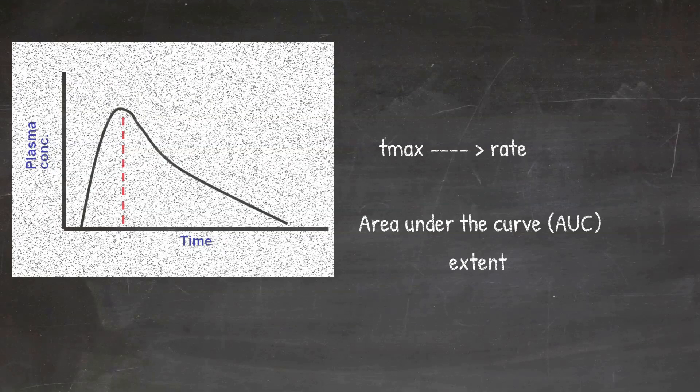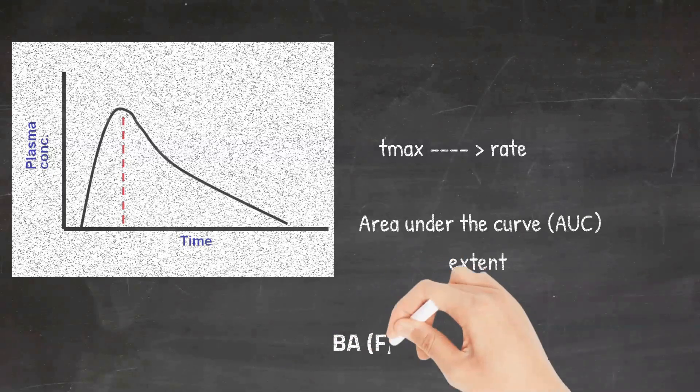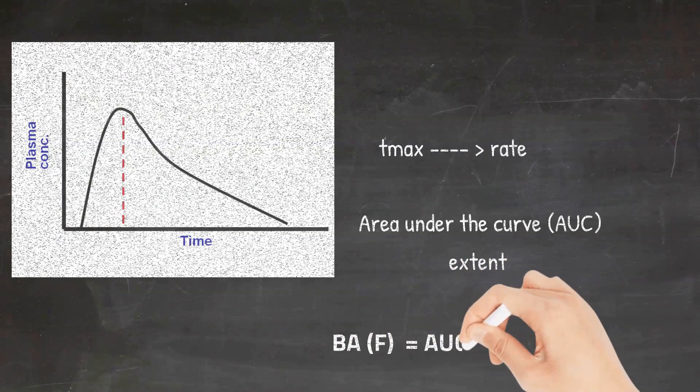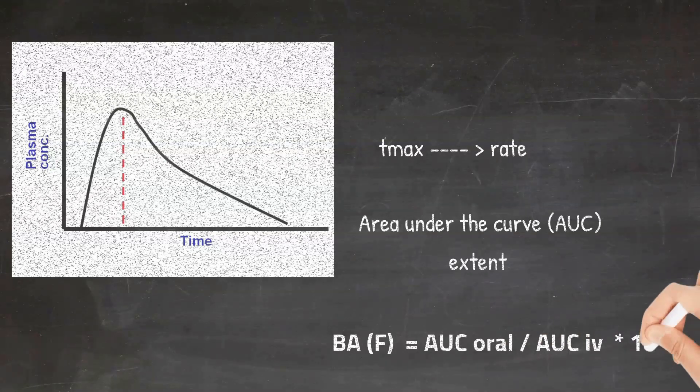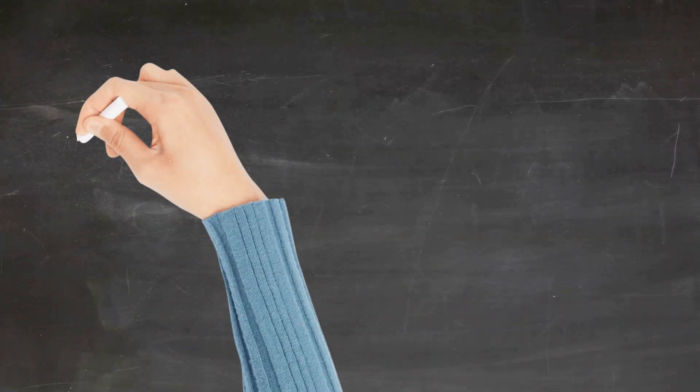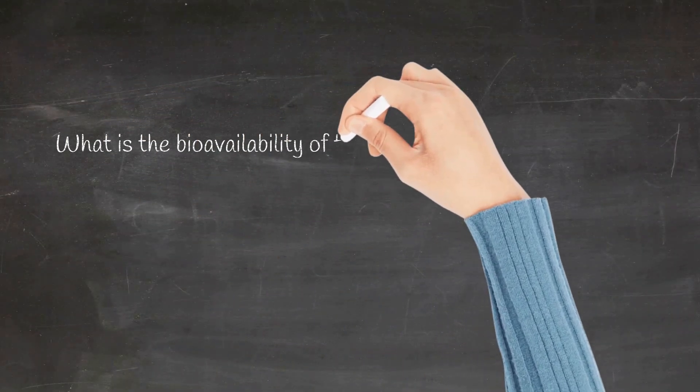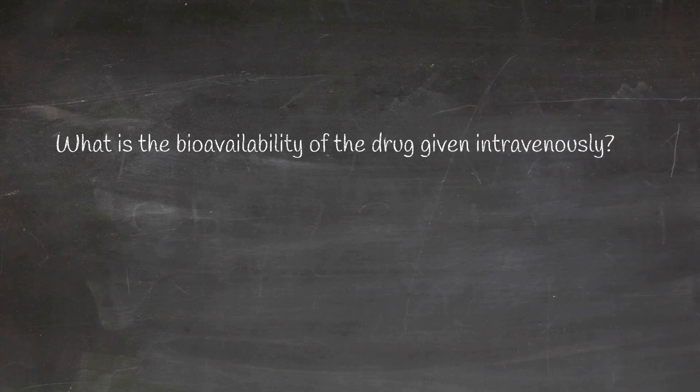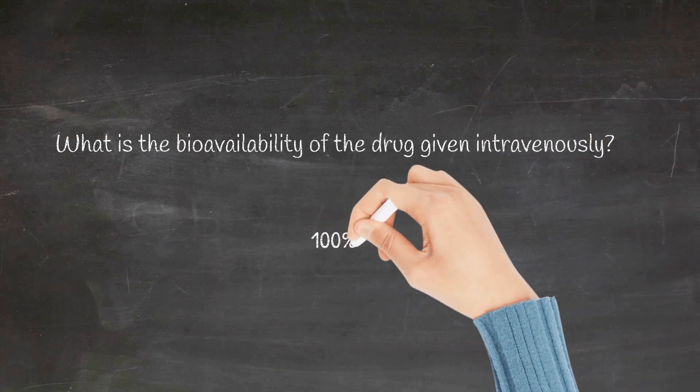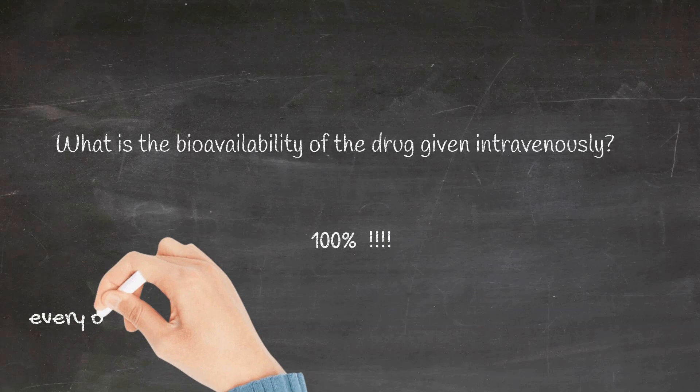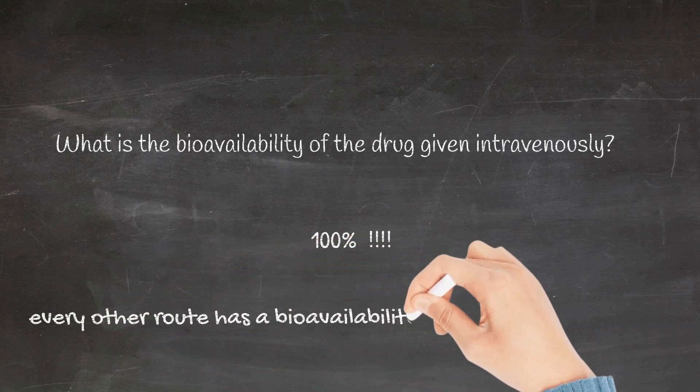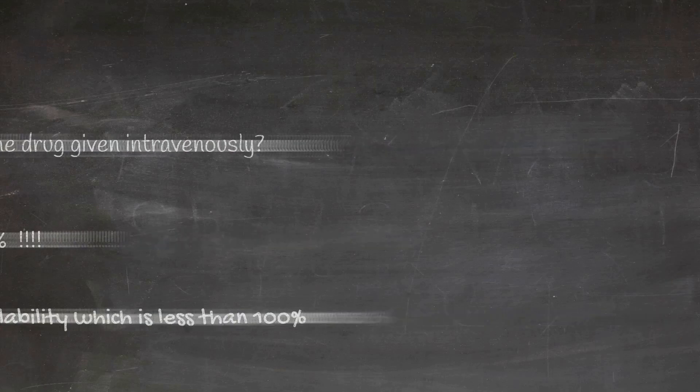Bioavailability is calculated as... So what is the bioavailability of a drug that is given intravenously? It has to be 100% because intravenous drug is directly given into the systemic circulation. That's why the bioavailability here is 100. The bioavailability of every other route is usually less than 100%.